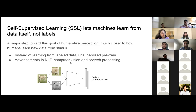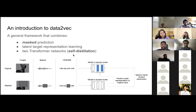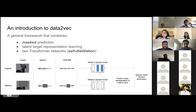Trying to unify this into one learning structure is where the team at Meta came in. They introduced Data2Vec, which is basically a unified framework for learning. You can see in the image below how it works: they take the input data — whether images, audio files for speech, or text — and learn representations from it.